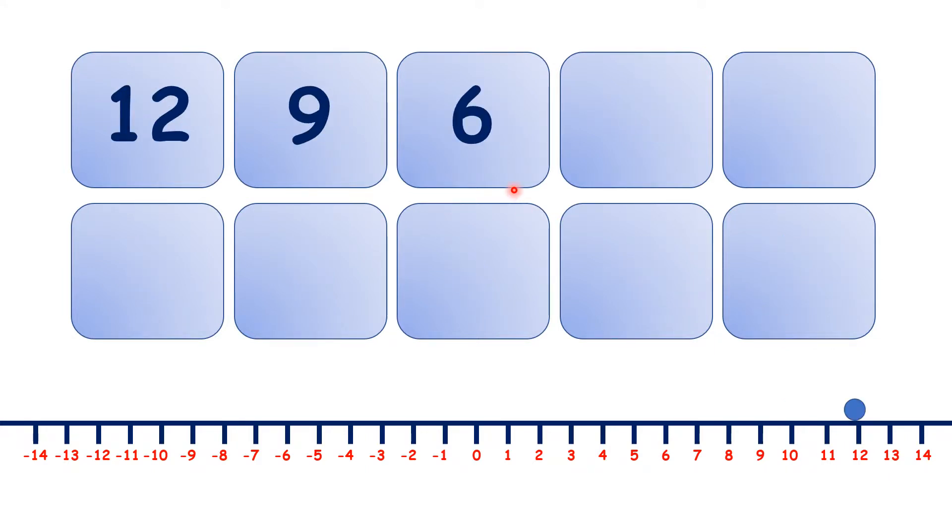Now here we have another sequence, but in this sequence we're subtracting or counting back. We have 12, 9, and 6. So looking at our number line, we can see that we're counting back in steps of 3.